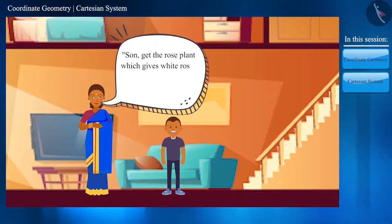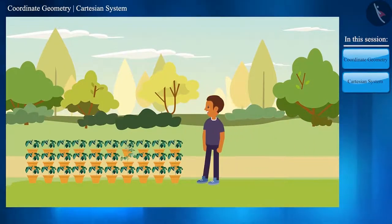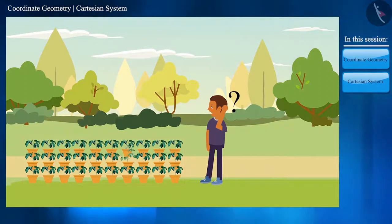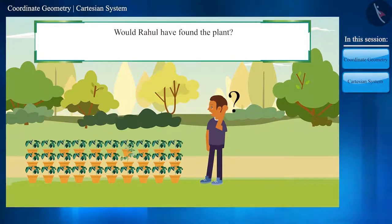But when Rahul went to the garden, there were no flowers in any of the plants which could help Rahul to identify the plant with white colored flowers. Now tell me, would Rahul have found the plant based on the information given by his mother?